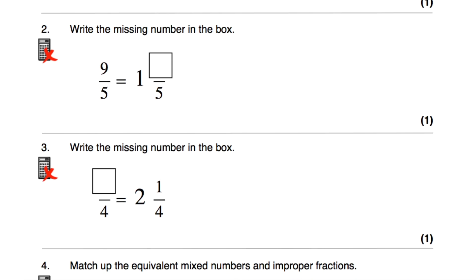Let's look at question number 2: write the missing number in the box. We've got the top-heavy fraction 9 fifths equals 1 and so many fifths. If you think about it in terms of fifths, 5 fifths is a whole, and then we'd have 4 more fifths left over, so it's going to be 1 and 4 fifths. Another way to think about it: 9 divided by 5 would be 1 remainder 4, so it's 1 and 4 fifths.